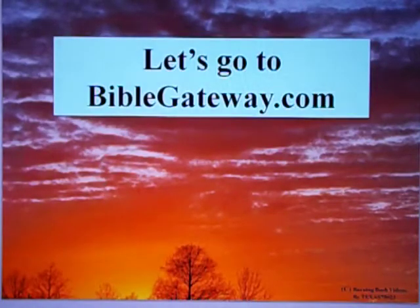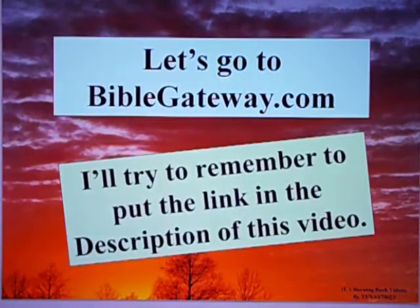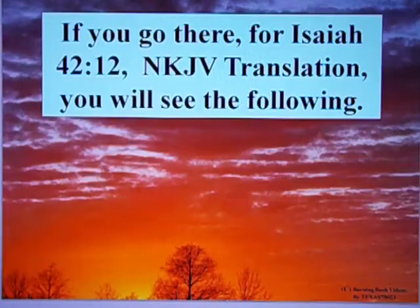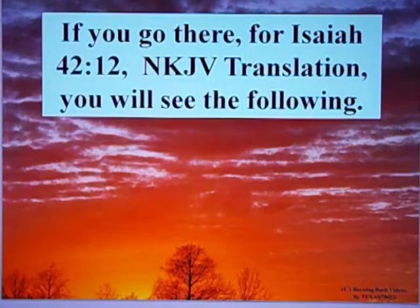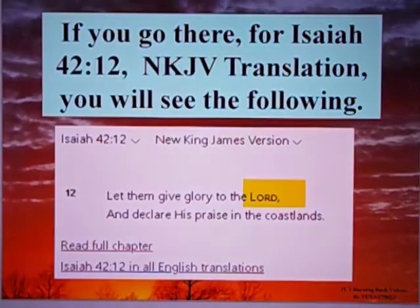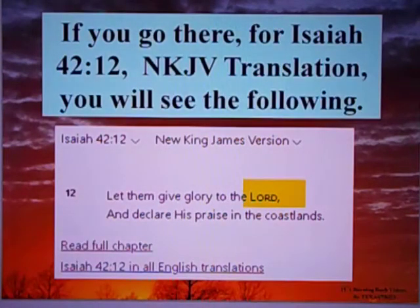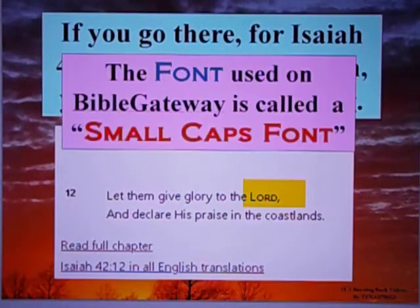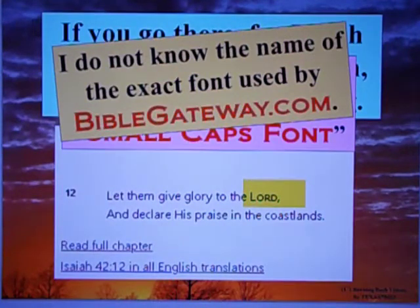So let's go to BibleGateway.com. I'll try to remember to put the link in the description of this video. If you go there for Isaiah 42.12, New King James Version translation, you will see the following: Isaiah 42.12, New King James Version — "Let them give glory to the Lord, and declare his praise in the coastlands." The font used on BibleGateway is called a small caps font. I don't know the exact name of the font used by BibleGateway.com.